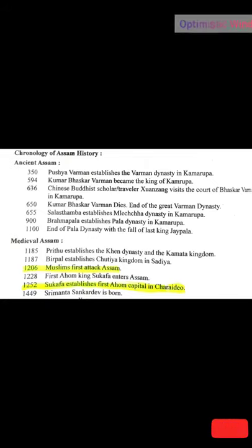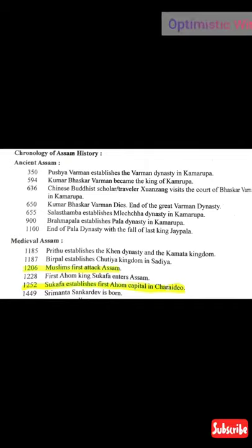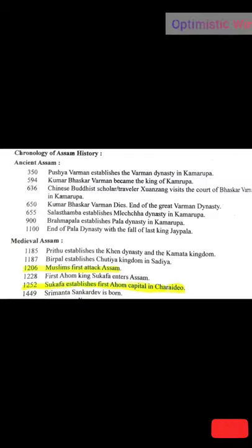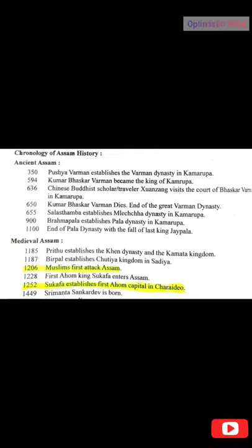Now the medieval history of Assam, which starts from 1185. In 1185, Prithsu establishes the Khen dynasty and the Kamata kingdom. In 1187, Birpal establishes the Sutia kingdom in Sadiya. In 1206, Muslims first attacked Assam — this year is really important. In 1228, first Ahom king Sukafa enters Assam. In 1252, Sukafa establishes the first Ahom capital in Charaideo. In 1449, Srimanta Sankardeva is born.